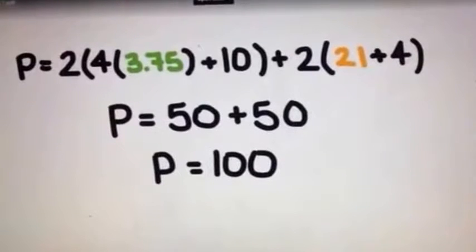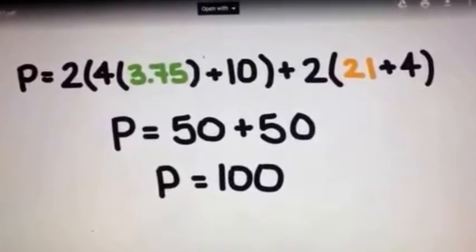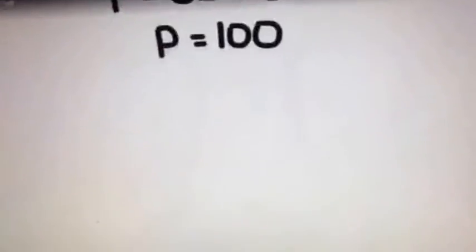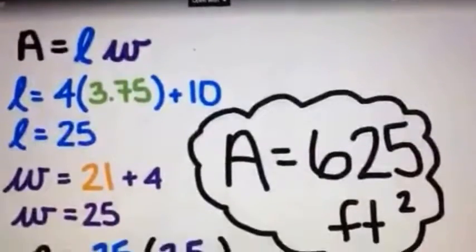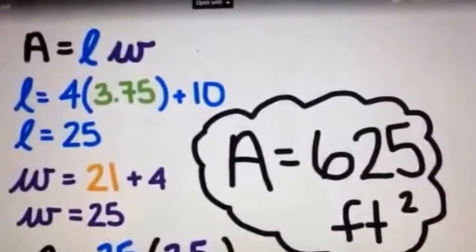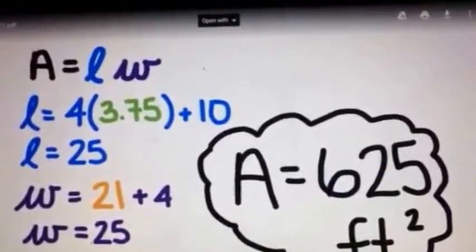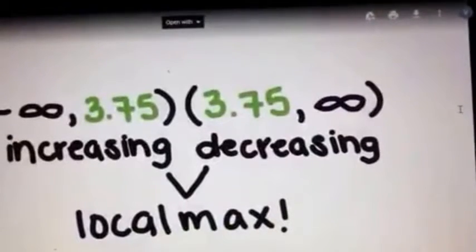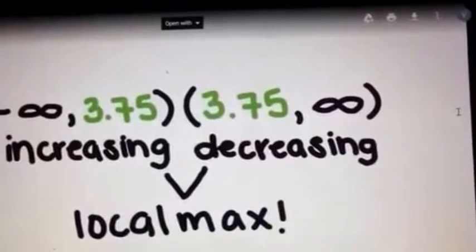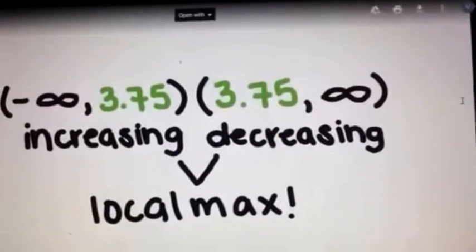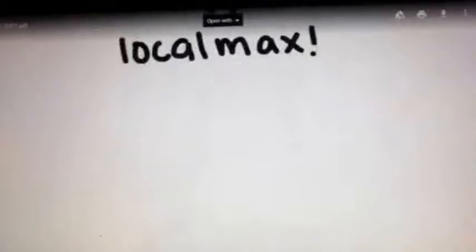She then plugged these back into the perimeter equation to make sure that the dimensions fit and were accurate. She also plugged them back into the area equation to show that she was maximizing her area. To prove this, she did the first derivative test and found that when X is 3.75, it is indeed a local max.